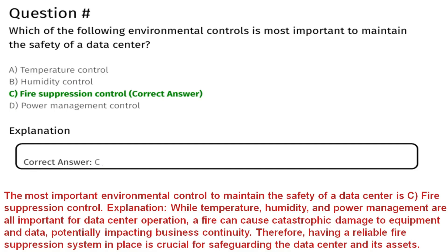Question six: which of the following environmental controls is most important to maintain the safety of a data center? Option A: temperature control. Option B: humidity control. Option C: fire suppression control. Option D: power management control. The correct answer is C, fire suppression control. While temperature, humidity, and power management are all important, a fire can cause catastrophic damage to equipment and data, potentially impacting business continuity. A reliable fire suppression system is therefore crucial for safeguarding the data center.